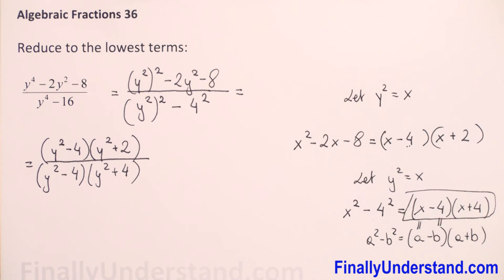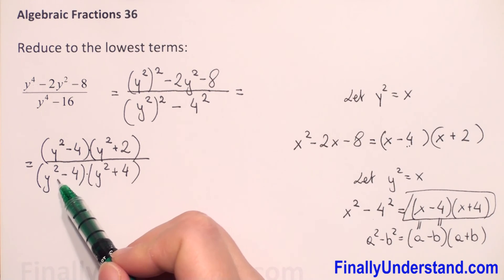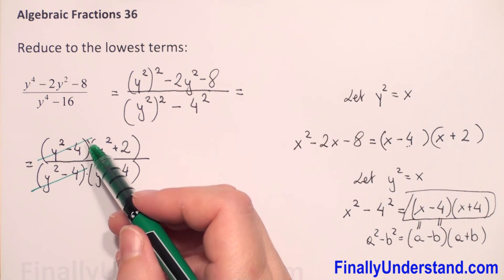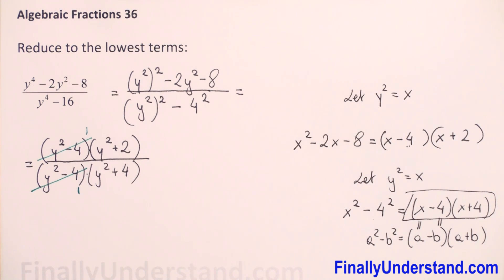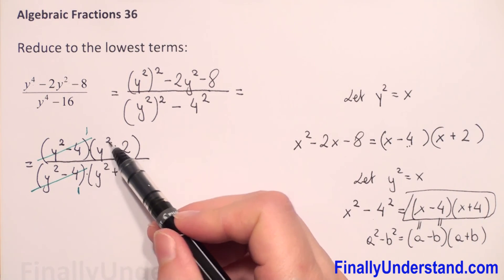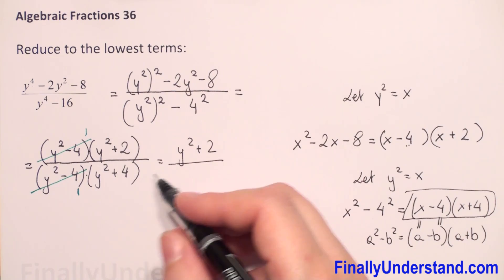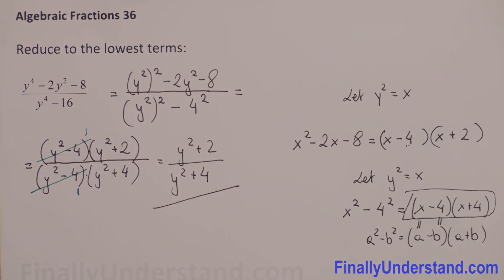Now we have multiplication in both the numerator and denominator. In the numerator we have (y squared minus 4)(y squared plus 2) and in the denominator (y squared minus 4)(y squared plus 4). We can cancel y squared minus 4 divided by y squared minus 4, which equals 1. So the result is y squared plus 2 over y squared plus 4. This is the final solution.